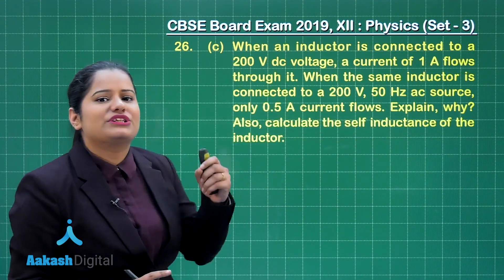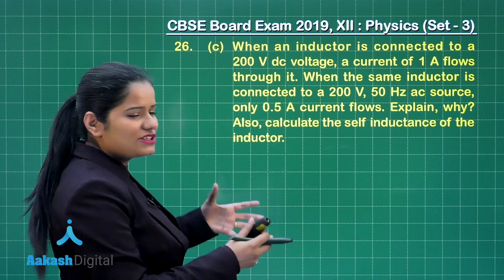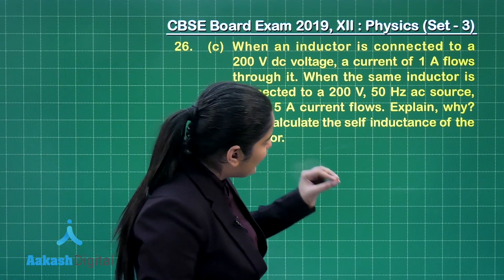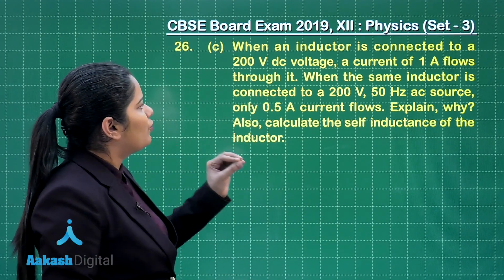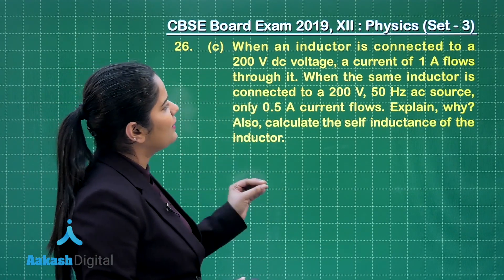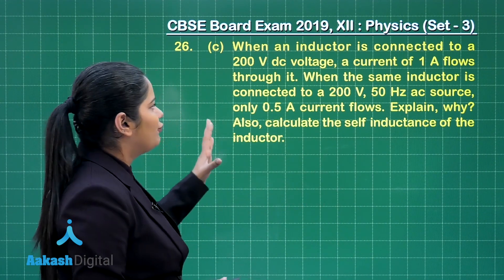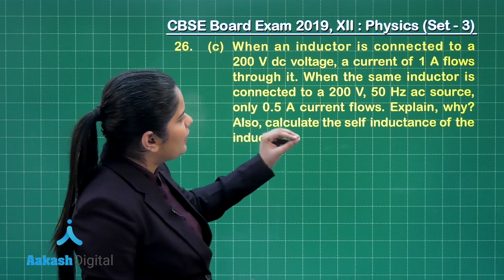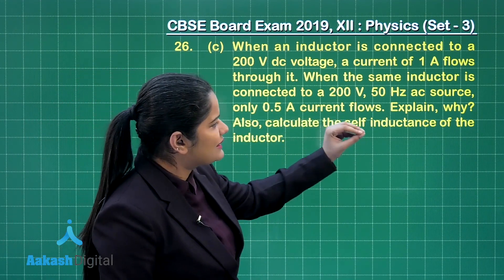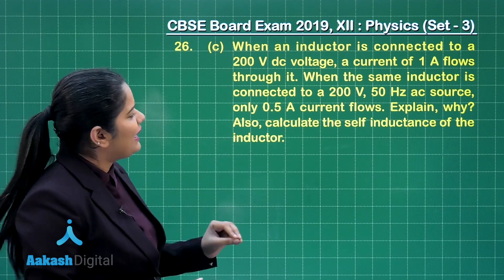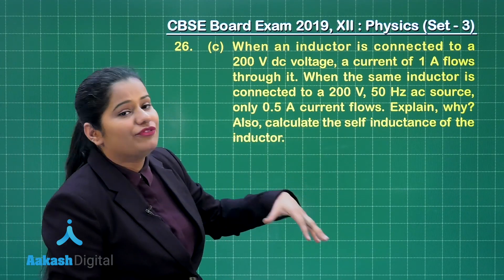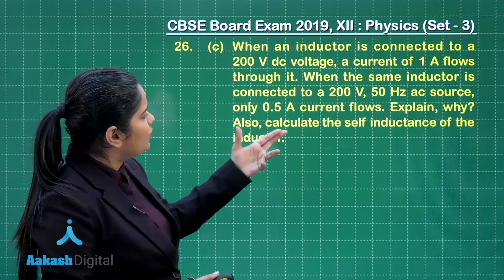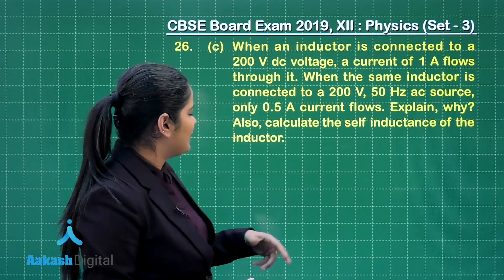Moving on to Part C of the first choice of question number 26. This says: when an inductor is connected to a 200 volt DC voltage, a current of 1 ampere flows through it. When the same inductor is connected to a 200 volt, 50 hertz AC source, only 0.5 ampere of current flows. We need to explain the reason why this happens and calculate the self-inductance of the inductor.